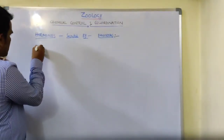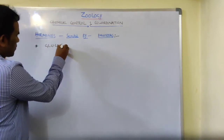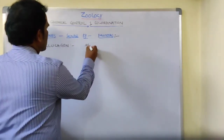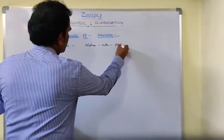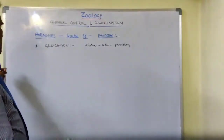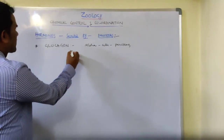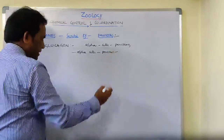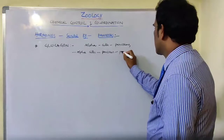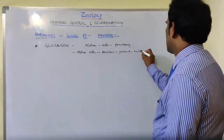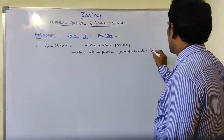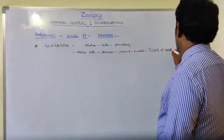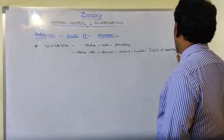The first hormone secreted by the pancreas is glucagon. Glucagon is a hormone secreted by the alpha cells of the pancreas, which are present in the middle of the islets of Langerhans.